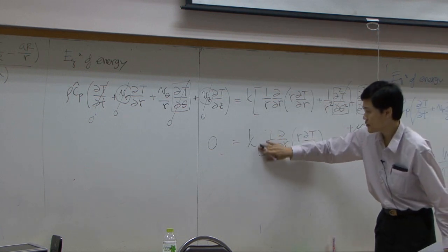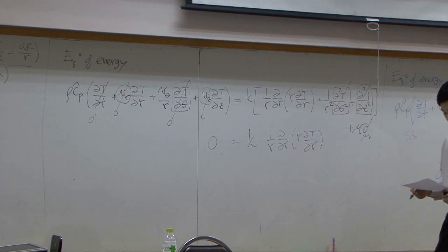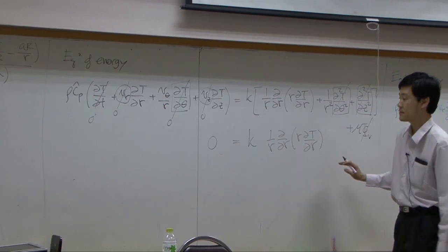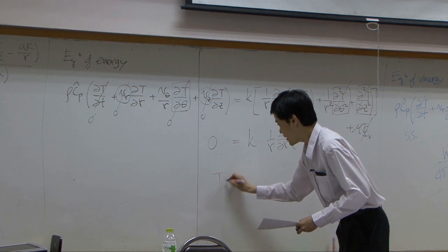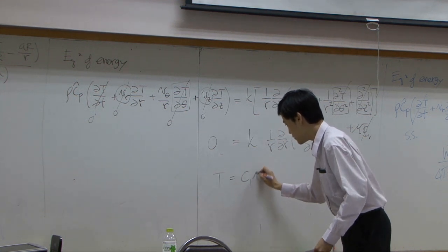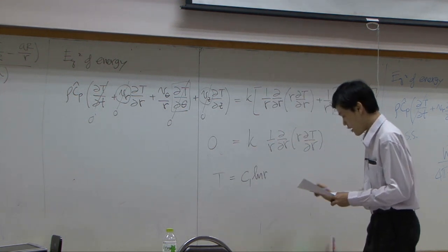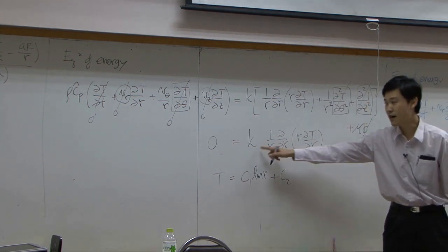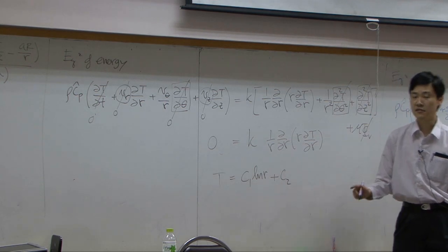Okay? So you end up with this part of the equation. You can integrate it. If you integrate it twice, you get t equal to c1 ln r plus c2 after integration. k is gone because left-hand side is zero.